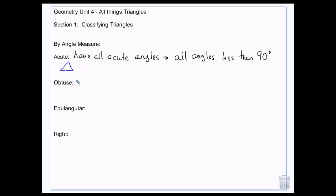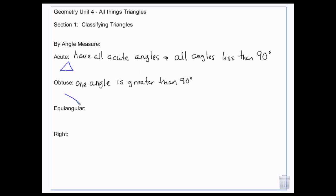Then you have obtuse, in which one angle is greater than 90. We can only ever have one obtuse angle in a triangle, because triangles have a total angle measure of 180. So if you have one angle that's more than 90, you couldn't have another. These are the triangles that are kind of wide and spread out because they have that one obtuse angle.